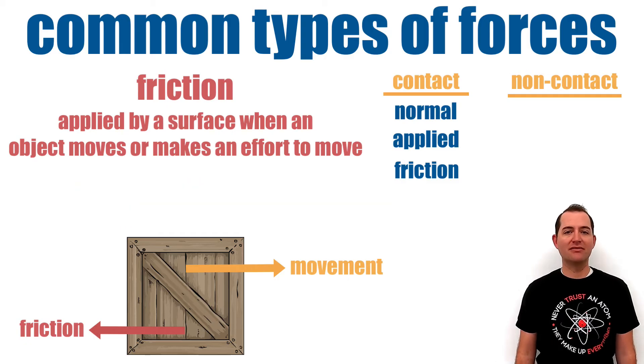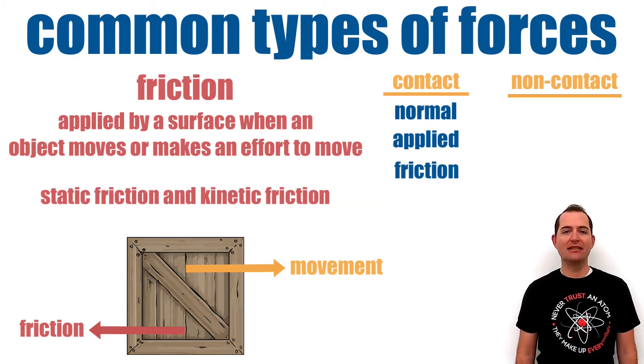There are two types of friction: static friction and kinetic friction. Static friction acts when the objects are stationary and kinetic friction acts when objects are moving. Static friction is always greater than kinetic friction between two surfaces.